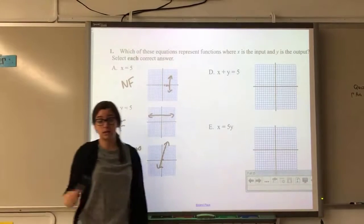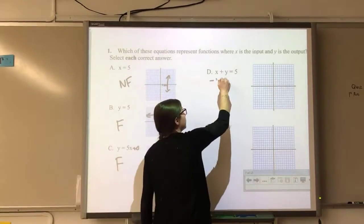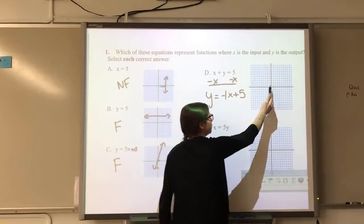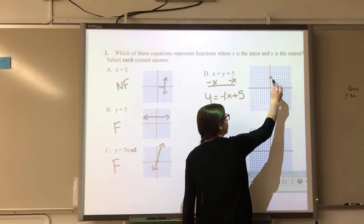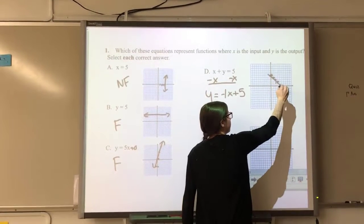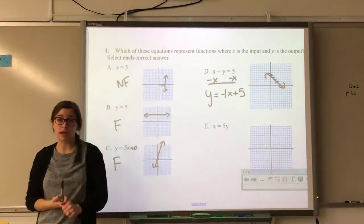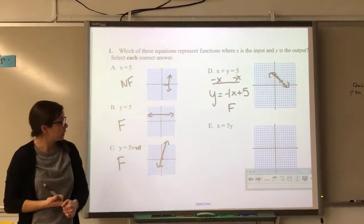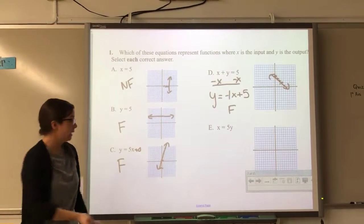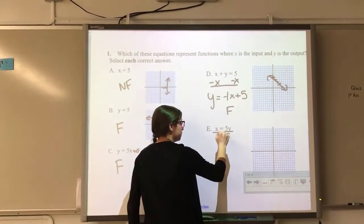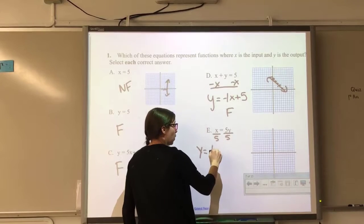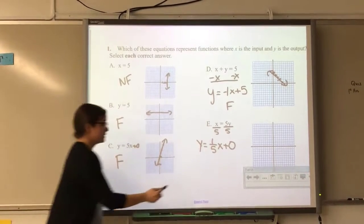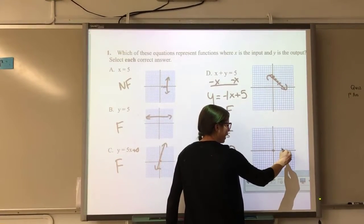If an equation isn't in slope-intercept form, you can't tell until you solve for y. Once solved, if it passes the vertical line test, it's a function. For x equals 5 over y, dividing gives y equals x over 5, which passes the vertical line test — it is a function.